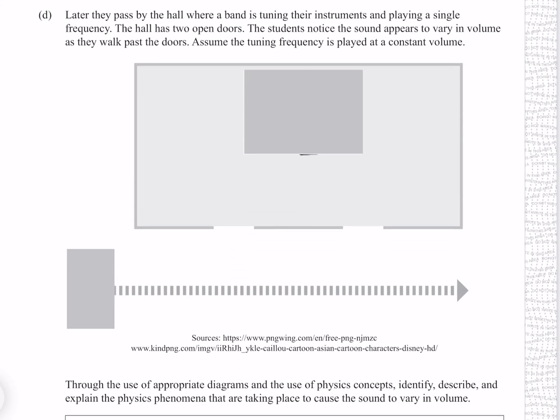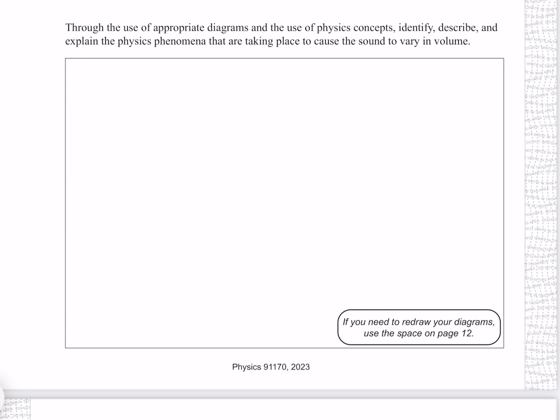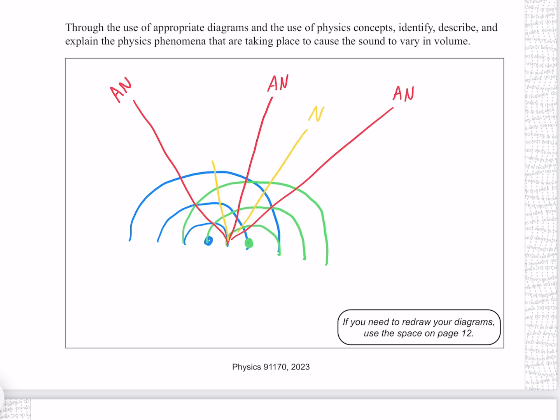Later they pass by the hall where a band is tuning their instruments and playing a single frequency. The hall has two open doors. The students notice the sound appears to vary in volume as they walk past the doors. Assume the tuning frequency is played at a constant volume. As they walk past the sound, through the use of appropriate diagrams and the use of physics concepts, identify, describe and explain the physics phenomena that are taking place to cause the sound to vary in volume. For this horrible question I'm going to need to draw a two-point interference diagram, which I'll do my best, where our peaks meet peaks we have an antinodal line, and in between we have nodal lines.